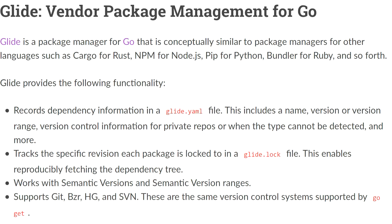For example, there was a tool called Glide, and basically Glide explicitly called out that it was trying to clone Cargo, NPM, Composer, Gem - basically whatever package dependency manager you want to think of for whatever language you like - as direct inspiration. It kind of had that two-step: you set up your dependencies, you install them, and then you build.